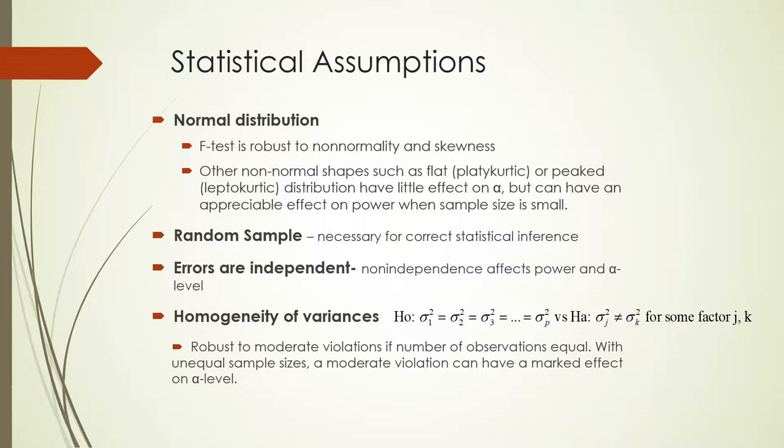Some assumptions of the approaches we'll be discussing. Number one: normal distribution. The F-test is generally robust to non-normality, but if you have flat or peaked distributions and your sample size is small or sample sizes differ greatly between groups, those deviations from normal can be a problem.